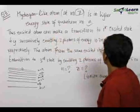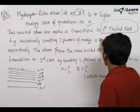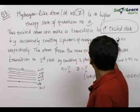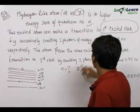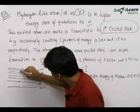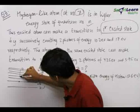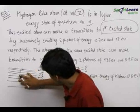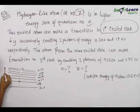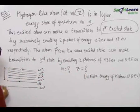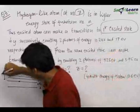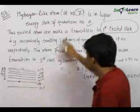This excited atom can make a transition to the first excited state, that is n=2, by successively emitting two photons of energy 10.2 eV and 17 eV. It emits two photons, and the total energy difference between these two states comes out to be 10.2 + 17 = 27.2 eV.